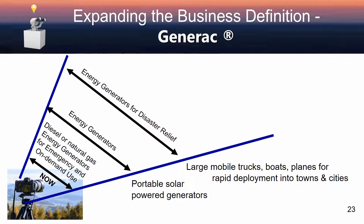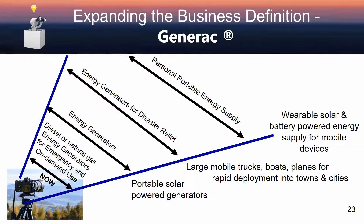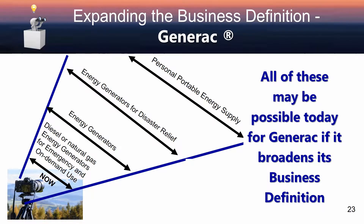Expanding another step further — something very bold — energy generators for disaster relief. Now we're looking at large scale energy generators, large mobile trucks, boats, planes for rapid deployment into towns and cities working with agencies like FEMA. And further, in an expansion of their business definition, personal portable energy supply — the idea of wearable solar and battery powered energy supply for mobile devices. In this case, all of these may in fact be possible today for Generac if it broadens its business definition.